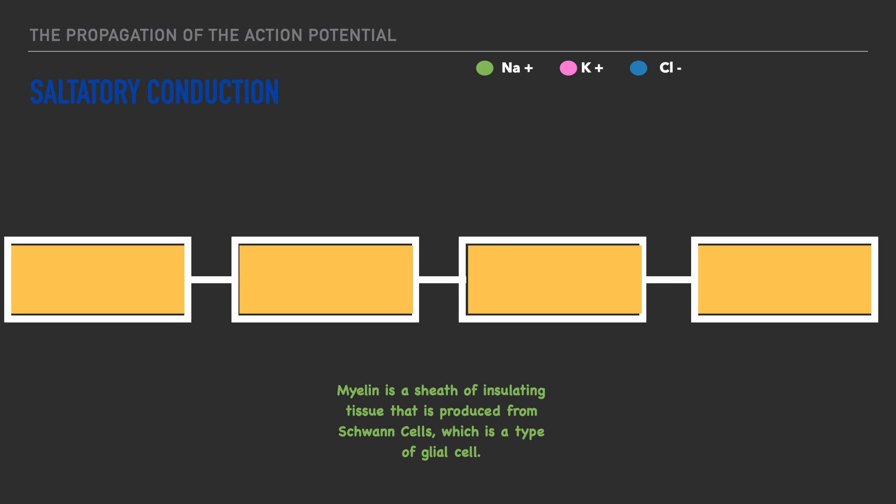Now, what's unique about the myelin sheath is that it prevents ion movement everywhere but the nodes of Ranvier. And so as a result, we still have the movement of ions, but the movement of ions would be seen leaping from node to node. And the advantage here is that we have a faster rate of nerve conduction with myelinated axons.